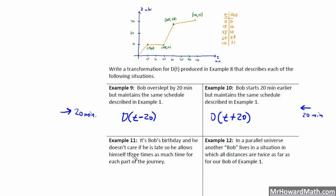It's Bob's birthday and he doesn't care if he is late. So he allows himself three times as much time for each part of the journey. All right, so this one is going to be the most complicated. So he is allowing three times as much time. So in other words, this first point, time, remember, is our x axis. So instead of being at 1510 like we were, we're going to be at 4510. So it's going to take him 45 minutes. So we're going to be way out here. So it's going to flatten this graph out like this.